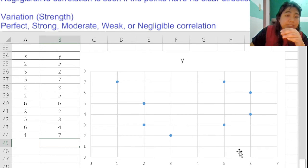But since this data is not linear, this is just no correlation. There is no seen correlation in this set of data.